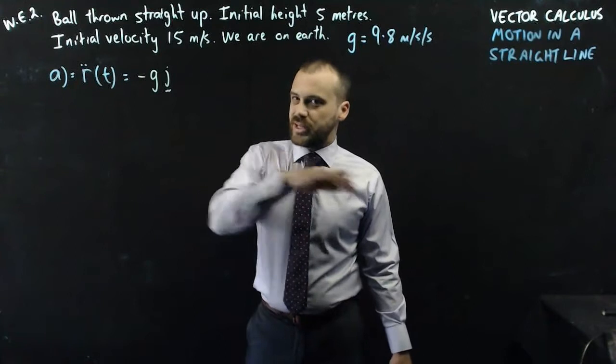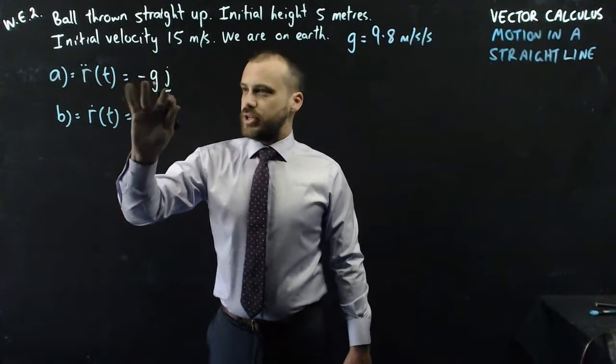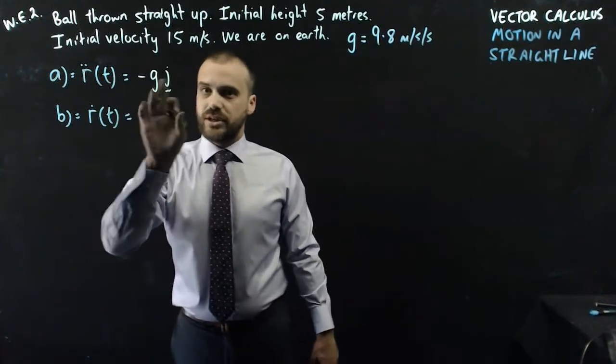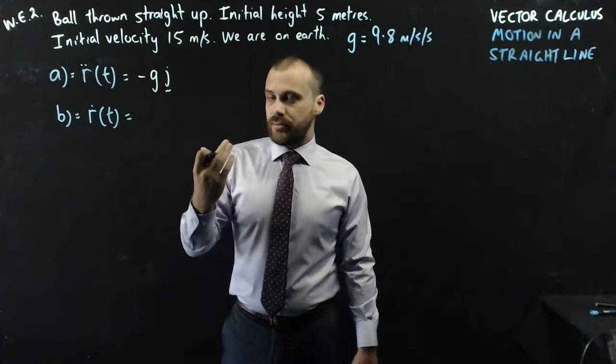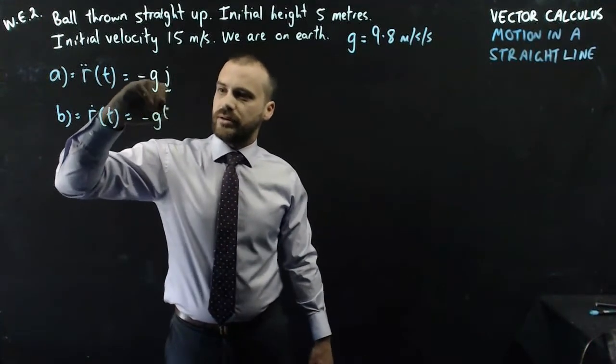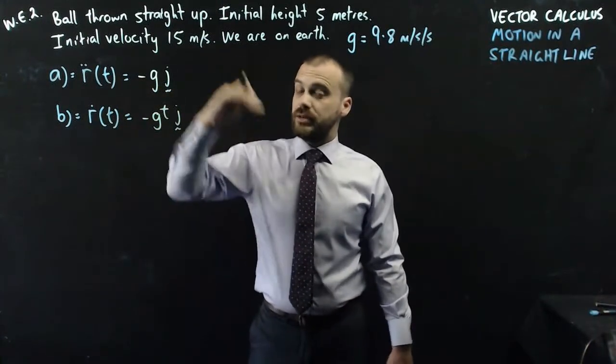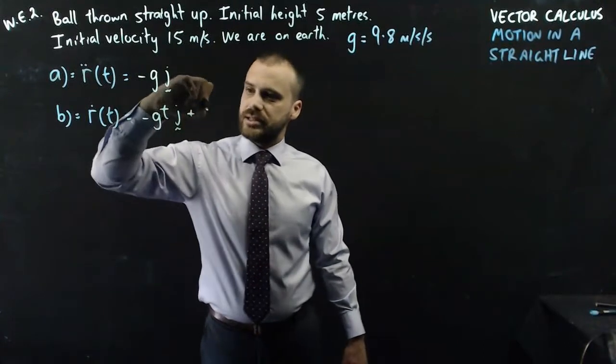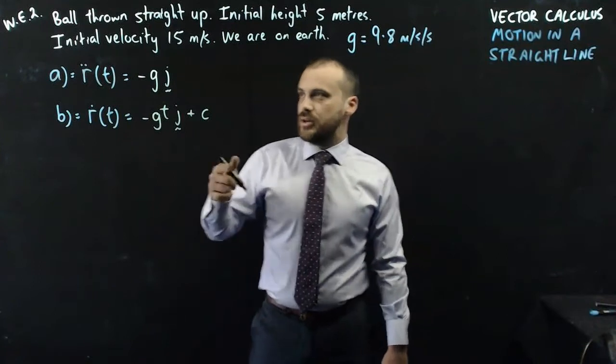You can probably guess what I'm going to ask you next. What's the velocity function? So we just need to anti-differentiate this. Now -g, don't forget that's -9.8. And the anti-derivative of a number is just the number multiplied by t. And we have j here. But when you anti-differentiate, there's always this plus c on the end.